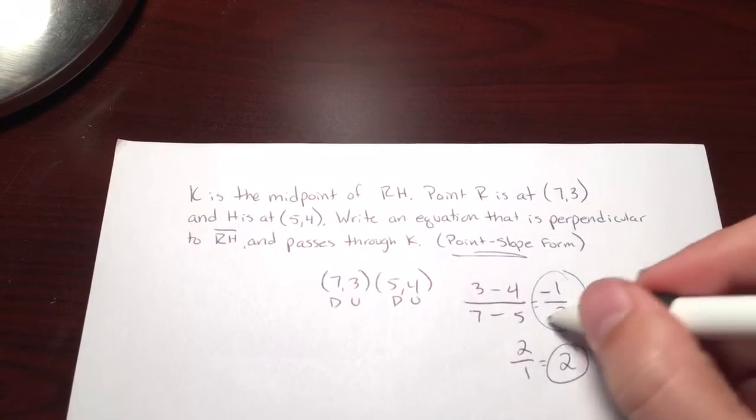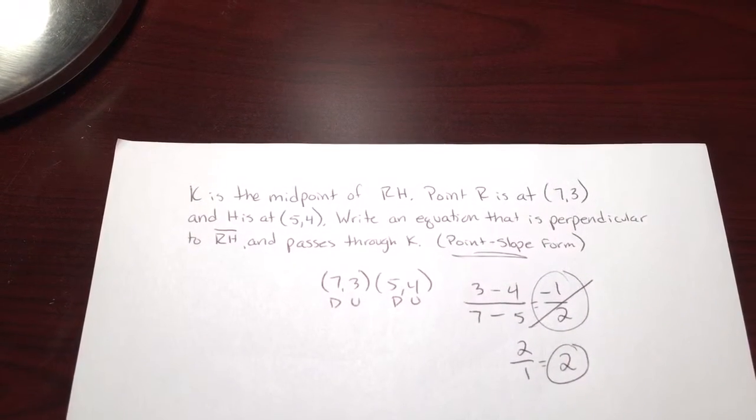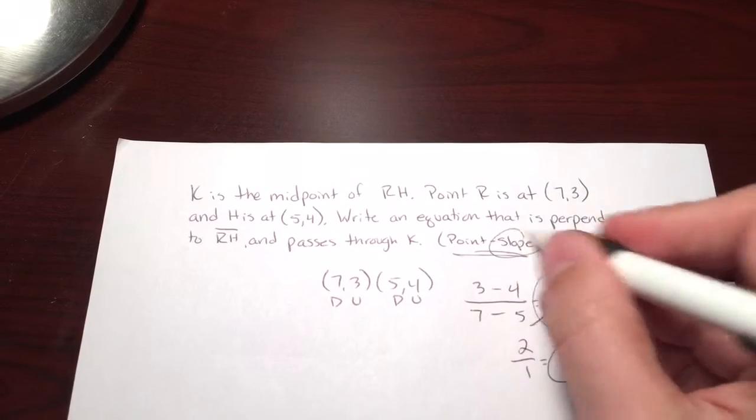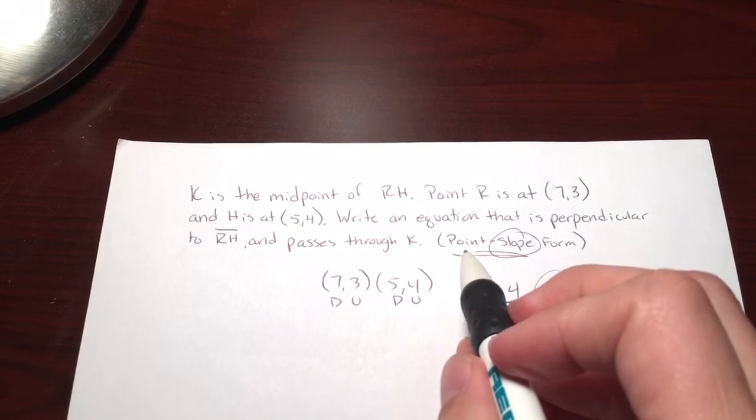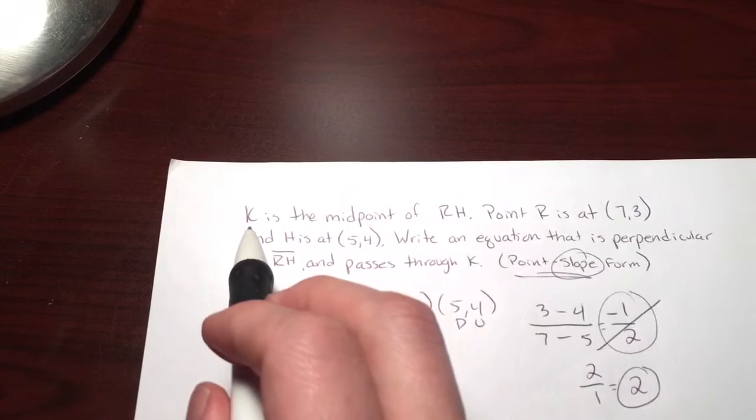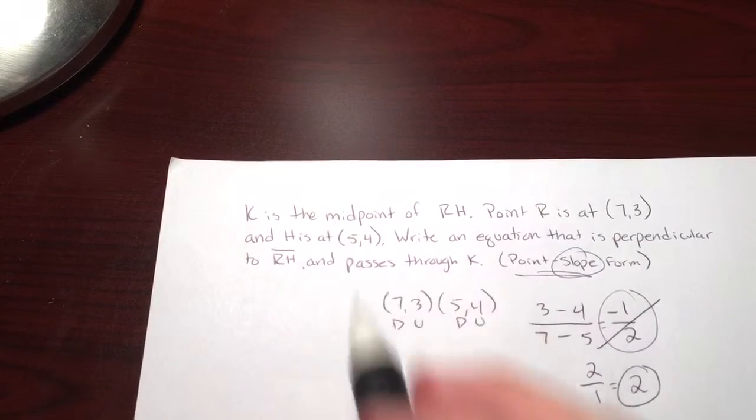This is the slope we want to use, not the original. So we've got that taken care of. Now we need to figure out the point that we're going through. Well, K is a midpoint, so we use the midpoint formula.